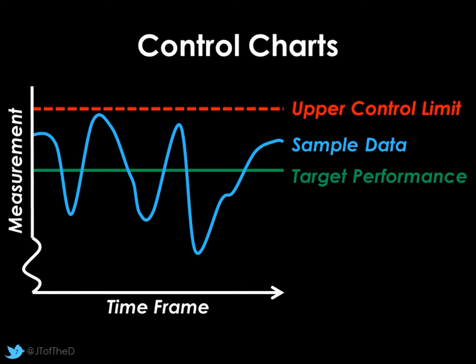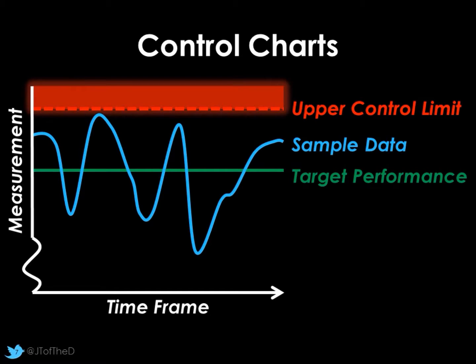The upper control limit is the highest level we're happy to accept — above this, we need to intervene. For example, if the green line is 26 grams for our chocolate bar, we don't mind 27 grams as it may balance out, but we don't want to go over a certain amount because it could cost money. The red area is where we'd look to intervene if data moves beyond those limits.